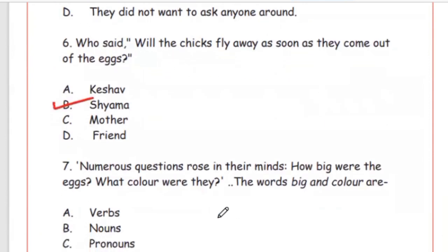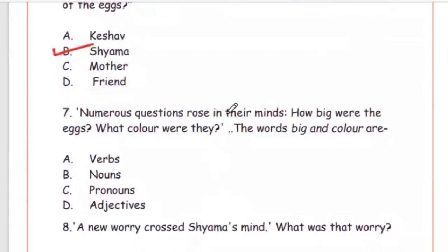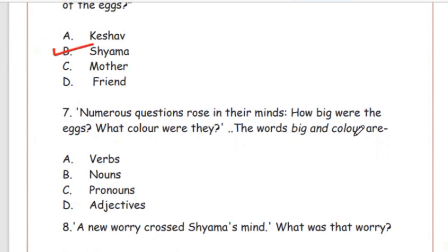Question 7: 'Numerous questions rose in their minds — How big were the eggs? What color were they?' The words 'big' and 'color' are — verbs, nouns, pronouns, or adjectives? Big and color are visheshan (adjectives), so the answer is Option D, adjectives.